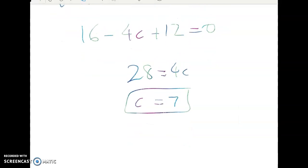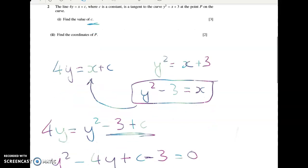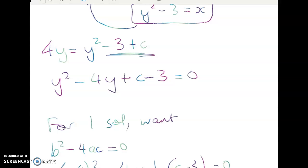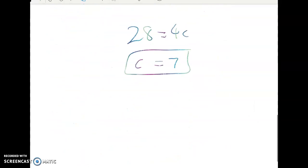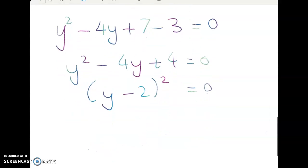So that's the first part of the problem done. So c is equal to 7 and now we want to find the coordinates of p. But we know that we want to find where there's this one point. So the easiest thing I think to do is to go back into that quadratic and solve it now substituting in 7. So we have y squared minus 4y plus 7 minus 3 is equal to 0. So y squared minus 4y plus 4 equals 0 giving me y minus 2 squared is equal to 0. Now that makes complete sense. I have to have a perfect square otherwise I'd be getting more than one or no solutions. So y is equal to 2.